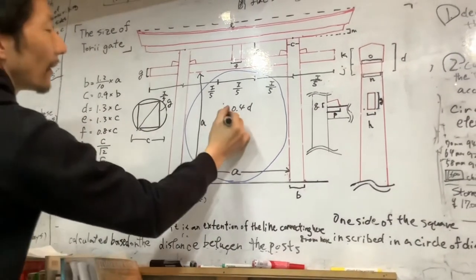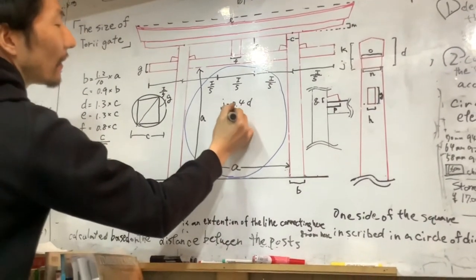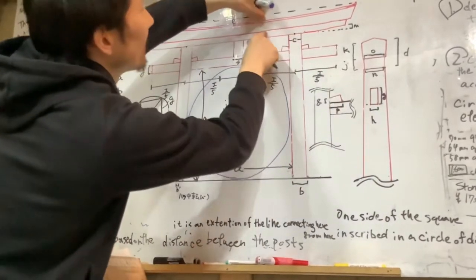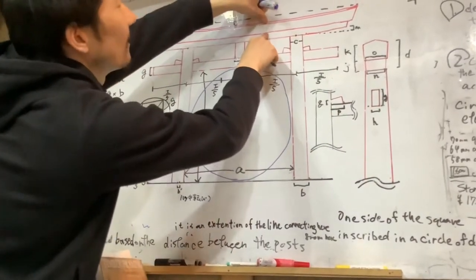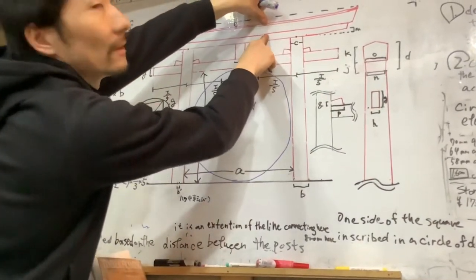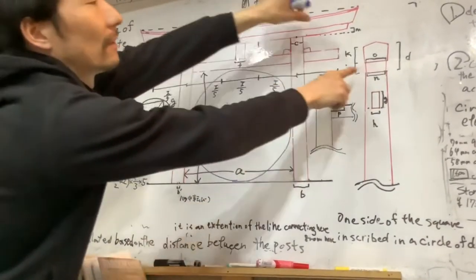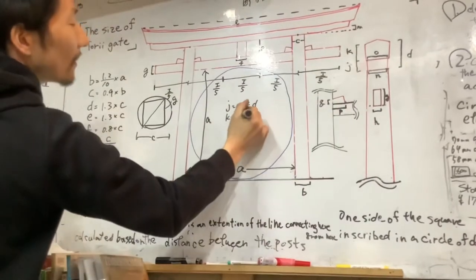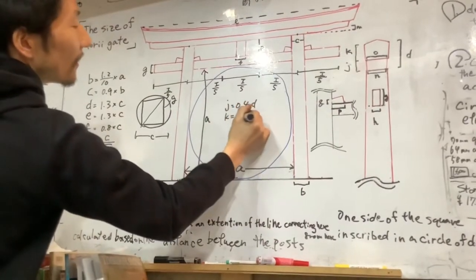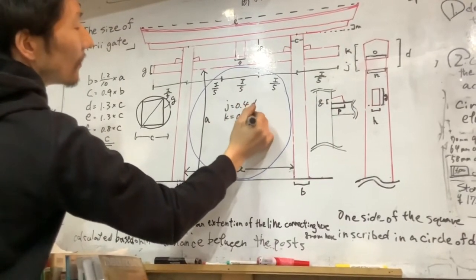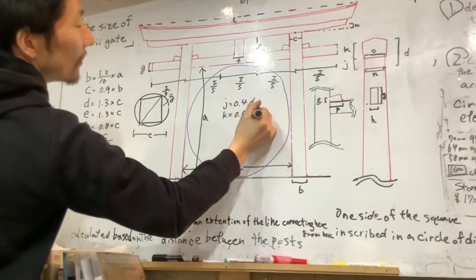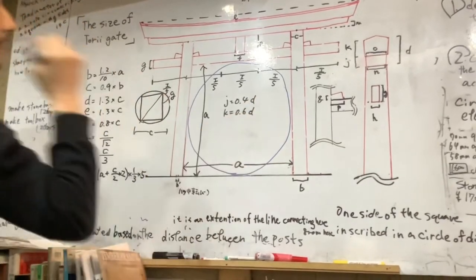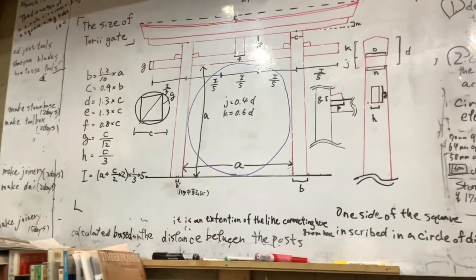K is this distance, this distance. K is equal 0.6D by D.